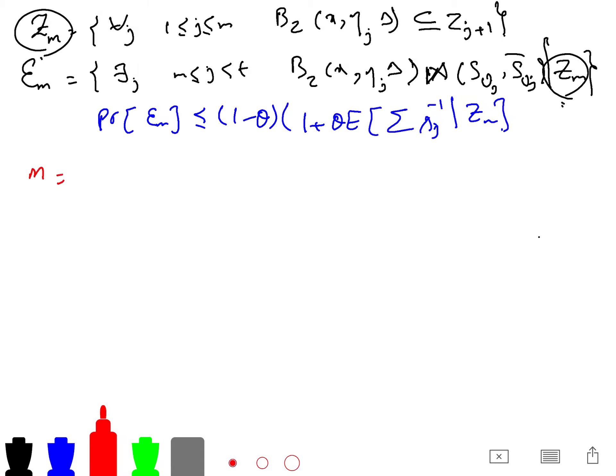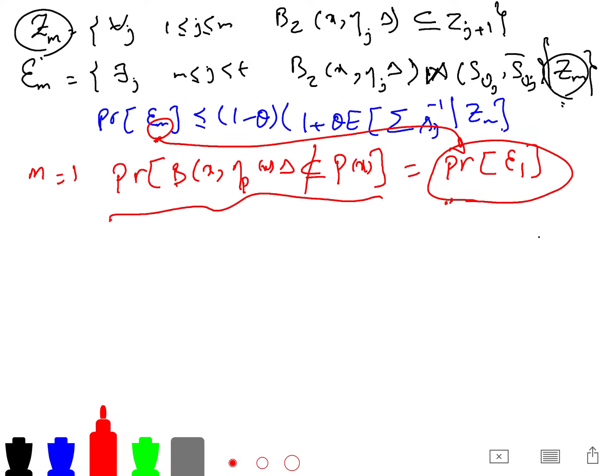Because if you just set M equal to 1, then it's what we want, what we are looking for. So in other words, the probability of B of X and eta delta is not a subset of P of X, the cluster containing X, is the probability of KC1. So it is enough to make M equal to 1 so that we find what is interesting for us. And doing this, we just use induction.